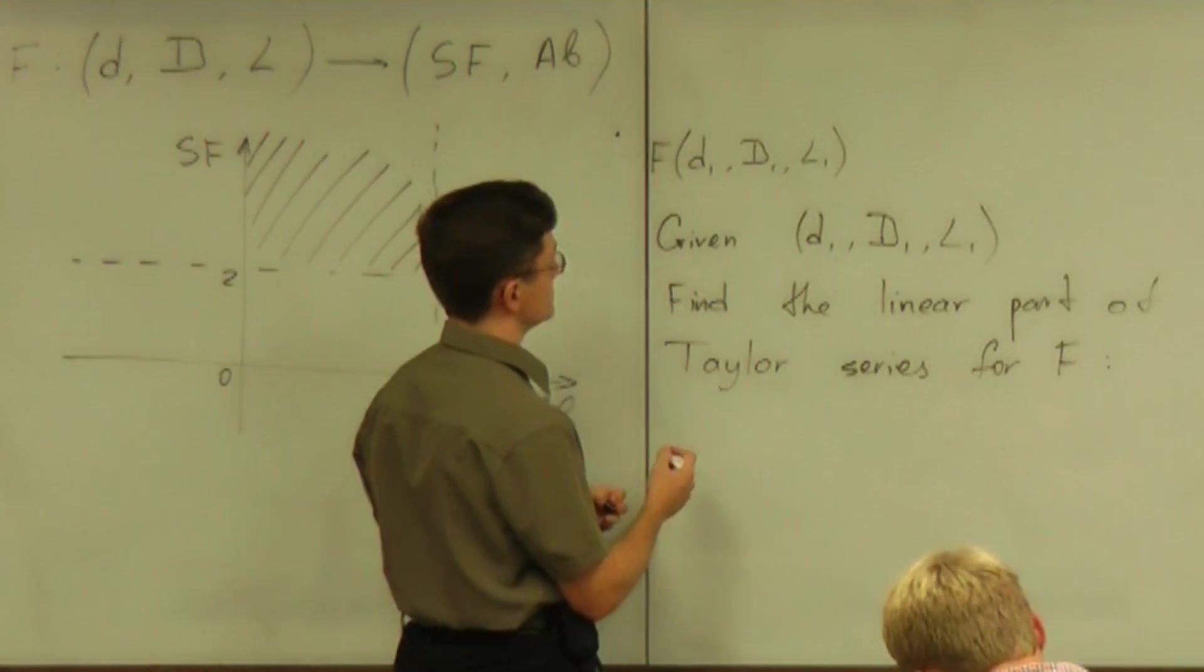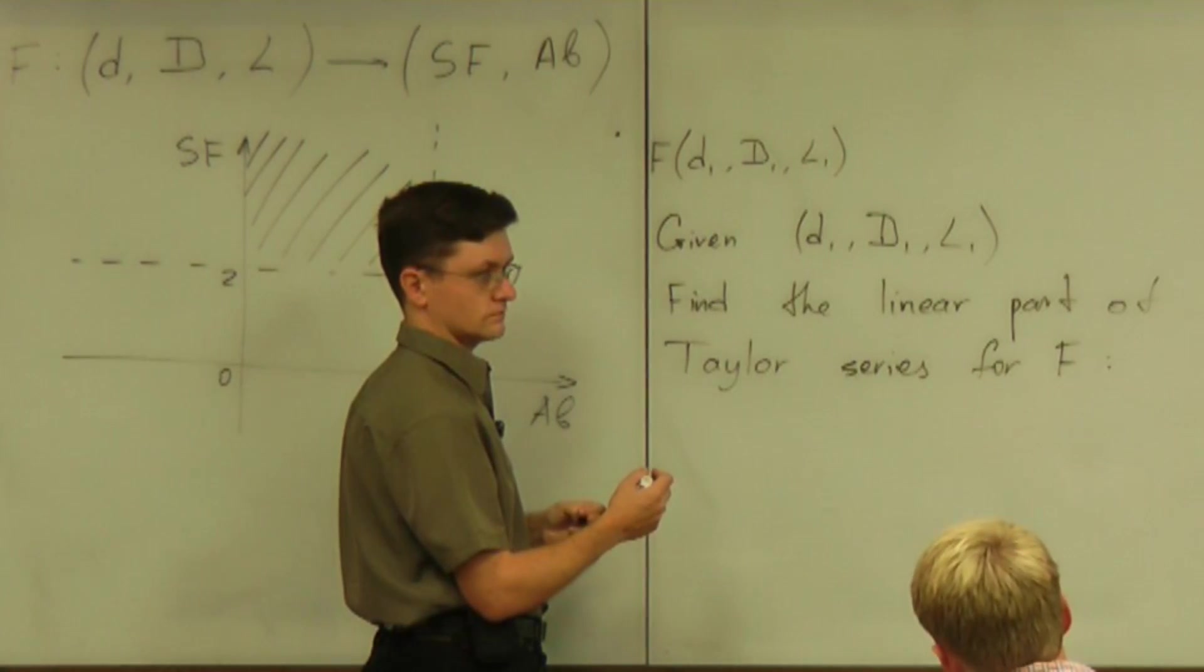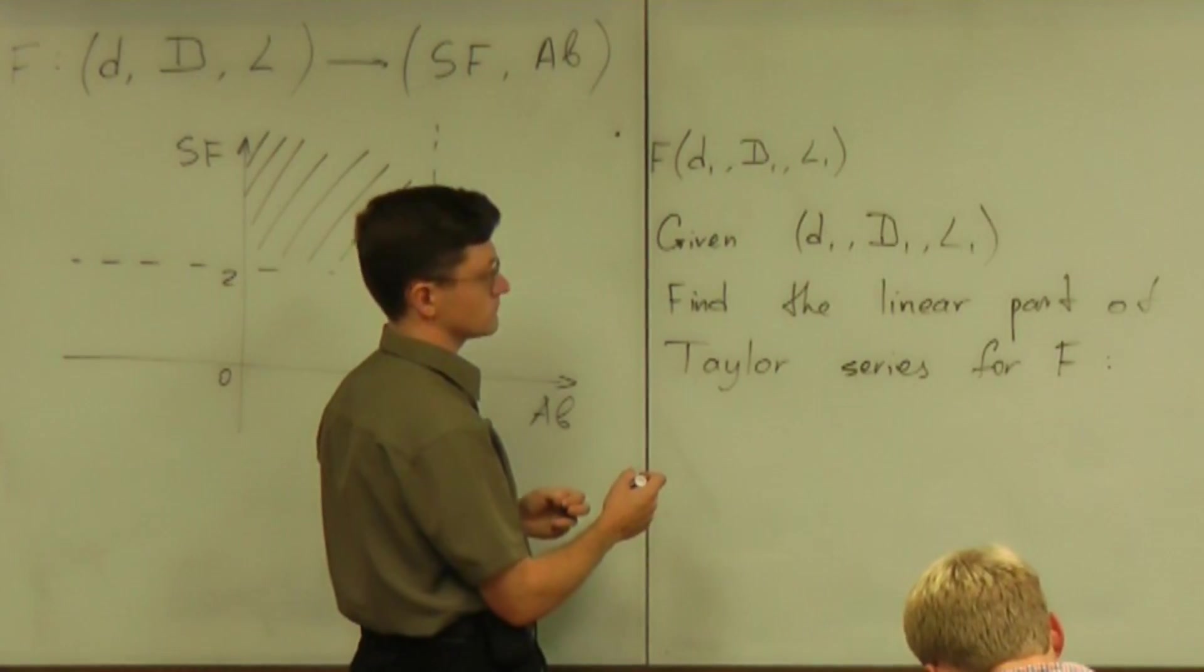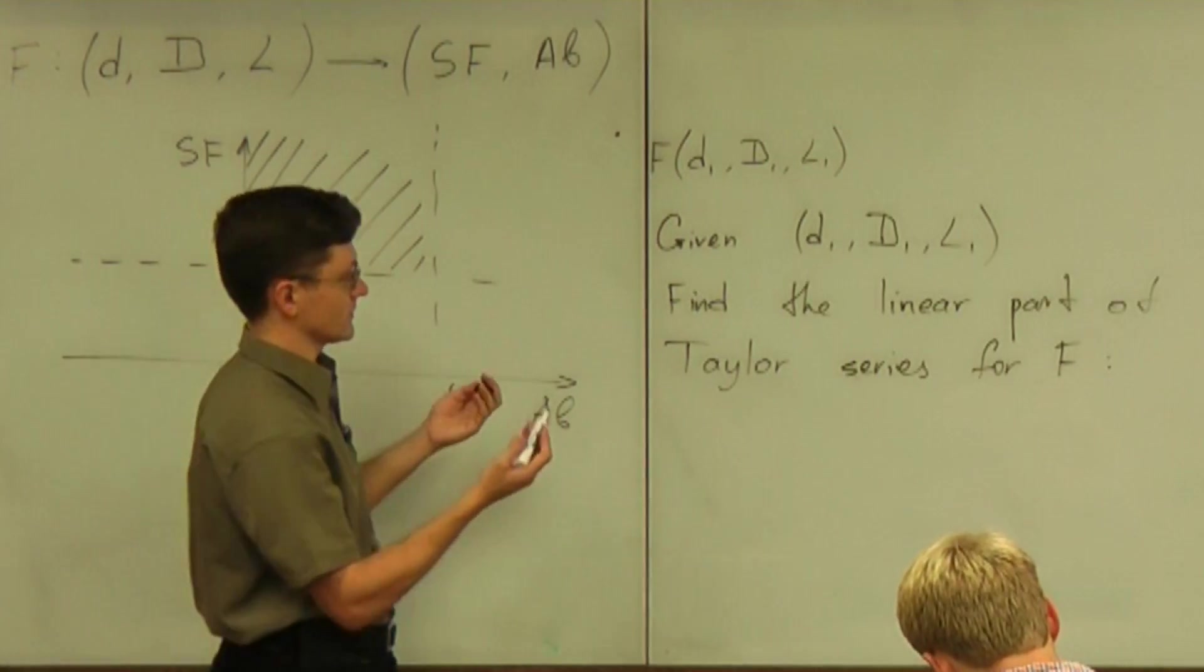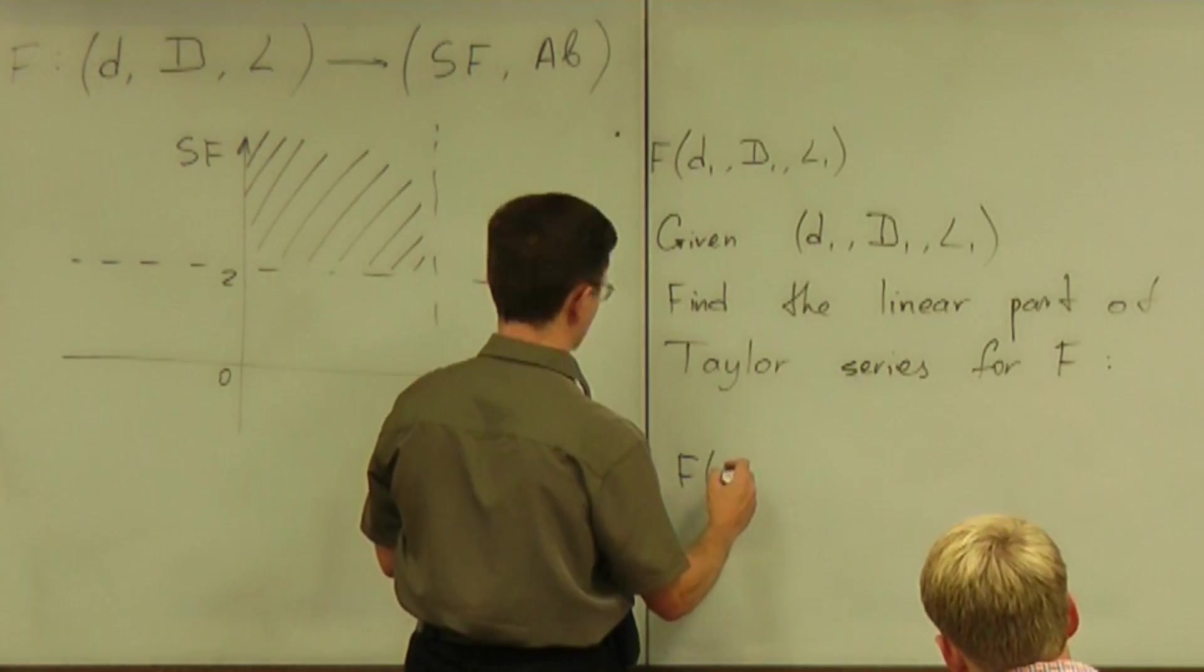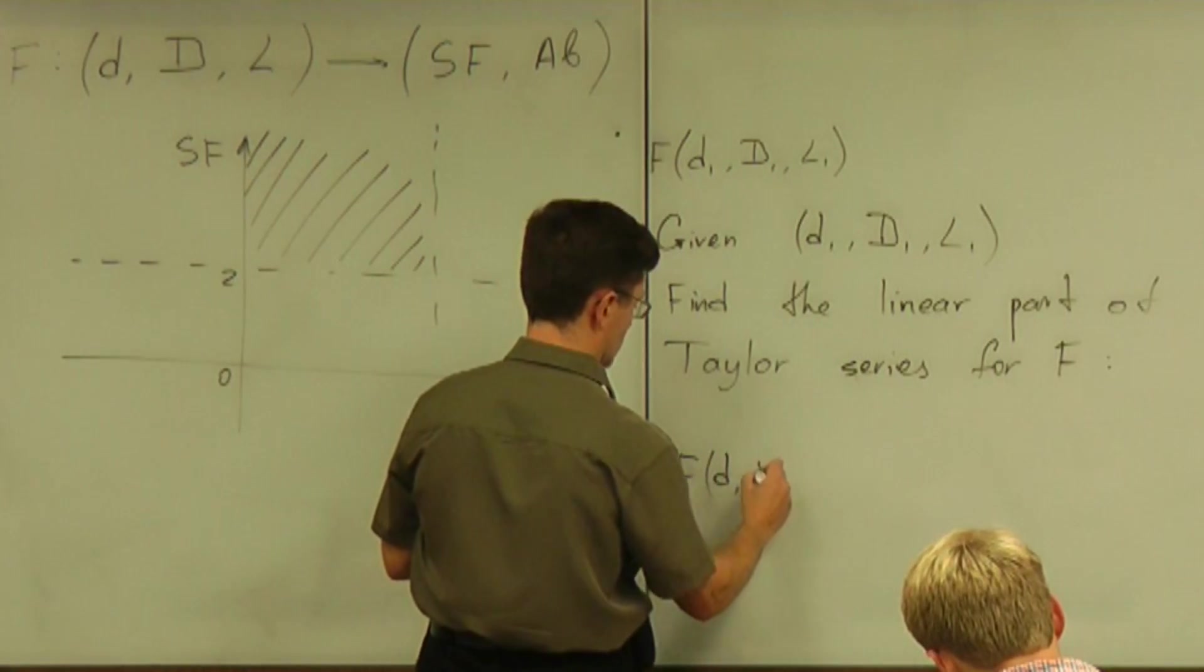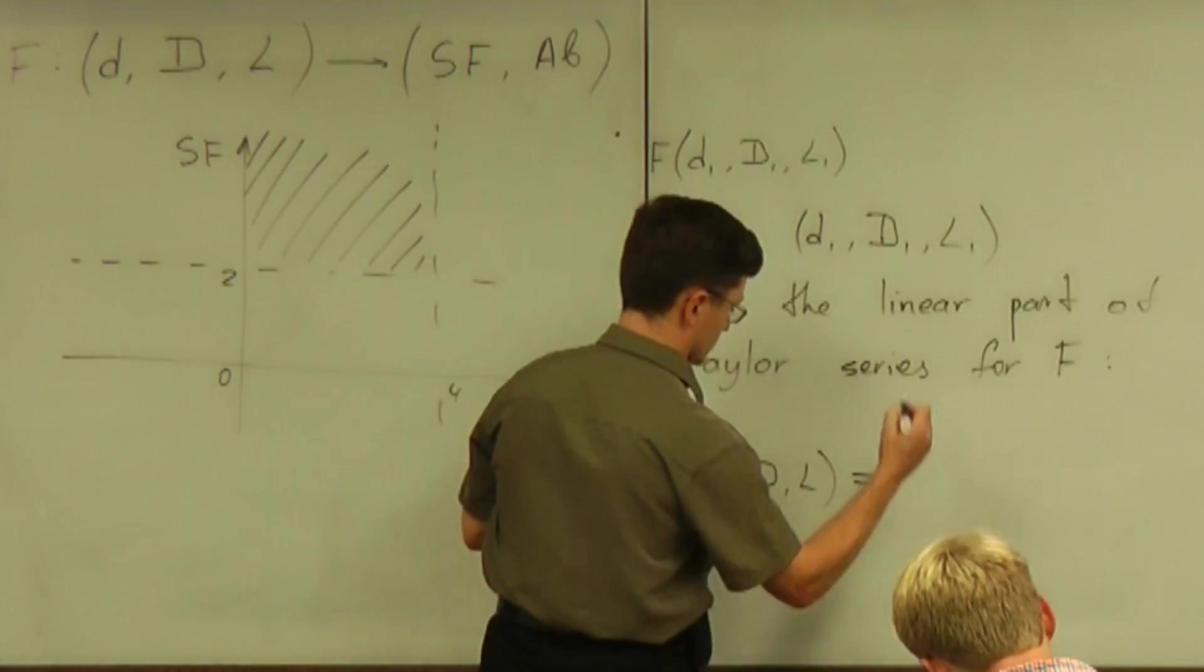What should it be? How should I even start? So F of D, capital D, L is equal to...